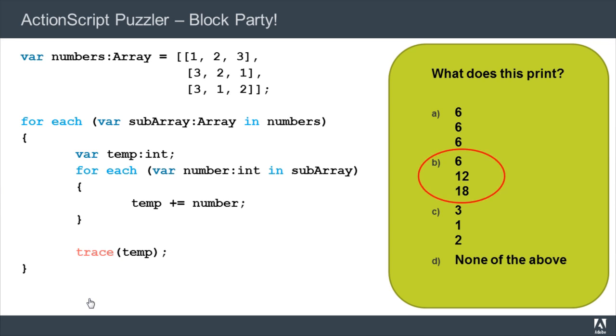The real answer is actually B, 6 12 18. Now why is that? It looks like instead of adding up the three numbers in each subarray individually to give us 666, it adds them all up cumulatively, giving us 6, 12, and 18.